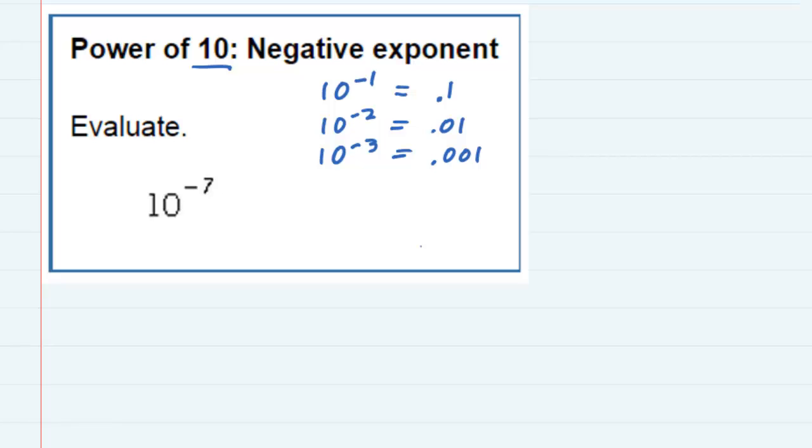So for our example here of 10 to the negative 7th, that's also going to be a 1 behind the decimal. But since the 1 needs to be 7 places behind the decimal, I'm actually going to have to put in some zeros. And in this case, I need 6 of them so that I can now have the 1 7 places behind the 0.